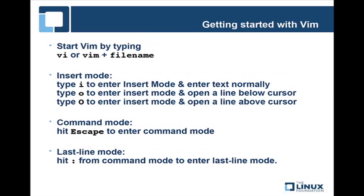Let's talk about how you can get started with Vim. You'll need to pull up a console or be at a terminal, and you can start Vim by typing 'vi' or 'vim' plus the file name. To get into insert mode, where you'll be typing and working with text, type 'i' for regular insert mode, or 'o' or capital 'O' to open a line below or above the cursor. This is particularly useful when working in configuration files.